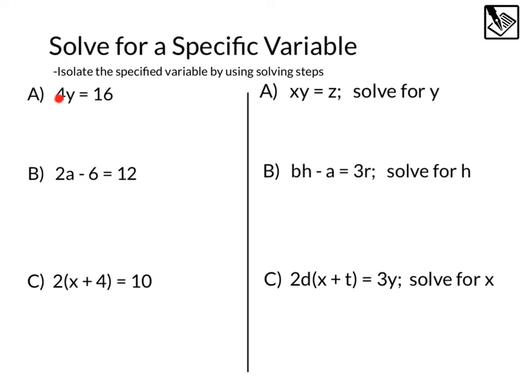Looking at a here, we've got 4y equals 16, and to solve this, what we'd usually do is say we could divide 4 both sides, 16 divided by 4 would give us our answer, y equals 4.